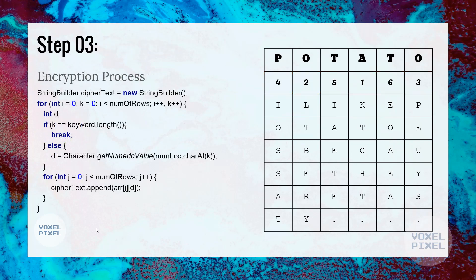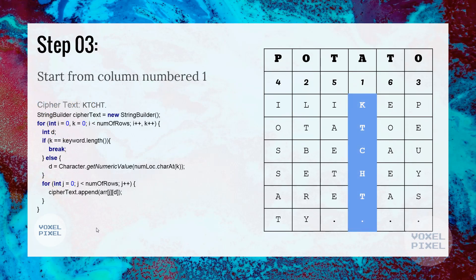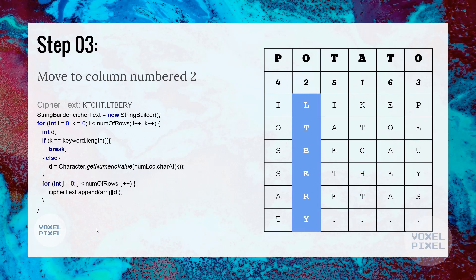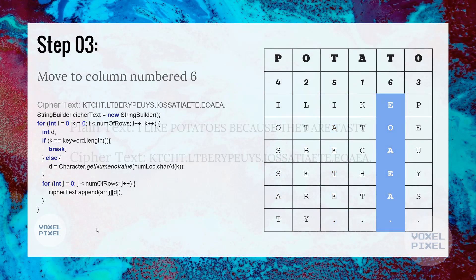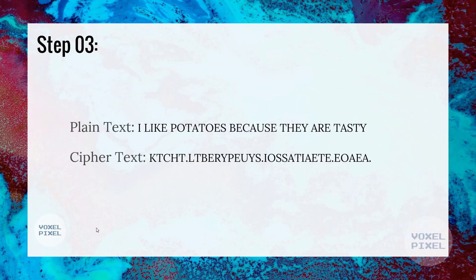The encryption process will begin by taking each letter from the column, starting from column number 1. Here, the letters are K, T, C, H, T, and dot. We will write all of them next to each other. As you can see on the left side, next to ciphertext. Next, we will move on to the column number 2, and write its letters. We will keep on doing this till we reach the last column. And we have obtained our ciphertext.